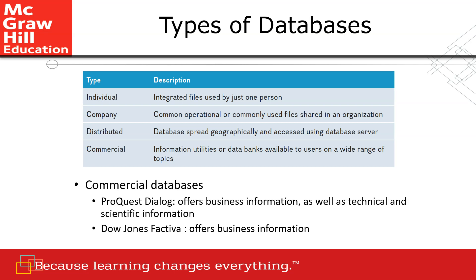Types of databases include individual, company, distributed, and commercial. Commercial databases like ProQuest Dialog can be accessed through a library and offer business, technical, and scientific information. Dow Jones Factiva is another commercial database where users can access business information about current and past economic indicators.